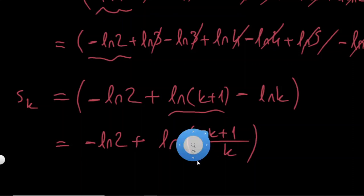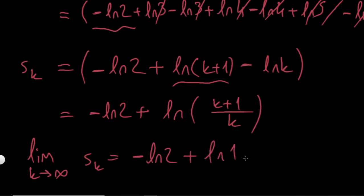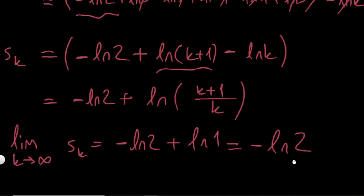Limit k goes to infinity, Sk. This thing is just a constant, this is minus ln 2. And this is gonna converge to ln of 1. And ln 1 is 0. So, this limit is gonna be equal to minus ln 2, which is equal to our sum. And that's the answer.